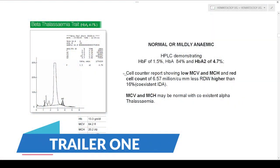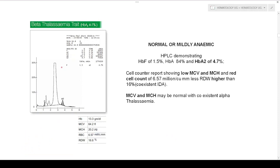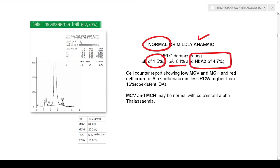This is how the HPLC chart looks. All the parameters are normal. The patient might have a completely normal CBC or might be mildly anemic. The HbA is normal around 84%, HbF is less around 1.5%, but most importantly the HbA2 is around 4.7%. This is the A2 graph. HbA2 has increased to approximately 4.7%. If you look at the MCV and MCH, they are low.